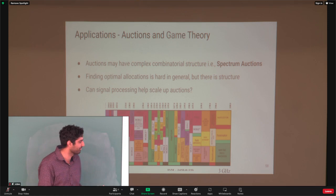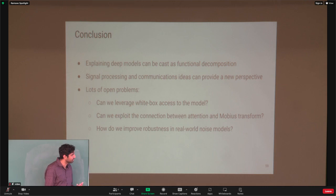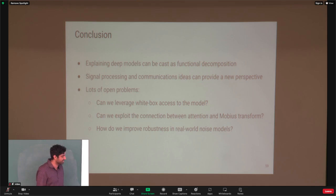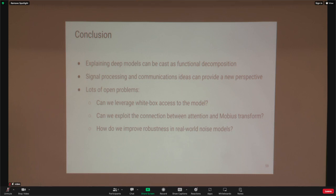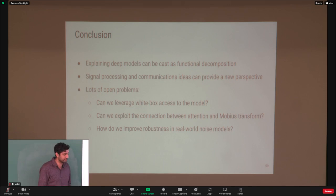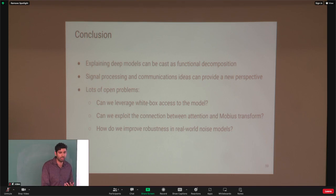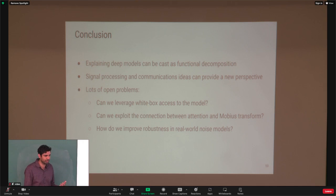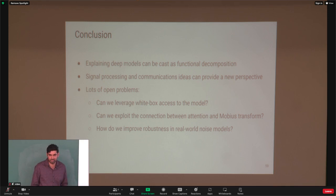To wrap up: explaining deep models can be cast as a function decomposition problem, and signal processing and communication ideas can provide a new perspective. There are lots of open problems: we mostly talked about black box methods, but there's also work to be done with access to attention matrices or activations. There's a connection between self-attention and the Mobius transform — particularly second-order Mobius coefficients and self-attention — and work from Christopher Ré's group at Stanford tries to replace attention with FFT convolutions. Finally, there's work to do in continuing to improve robustness with more real-world noise models.